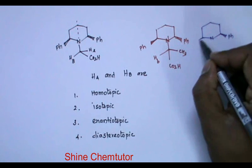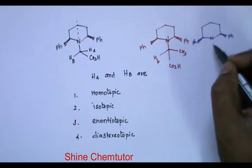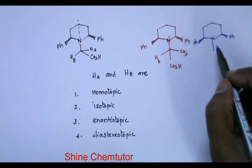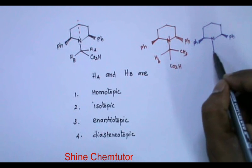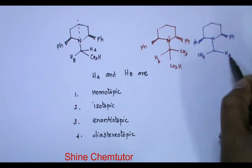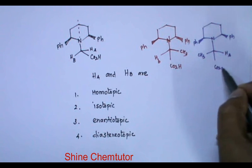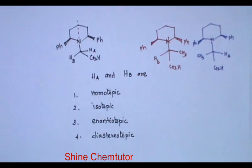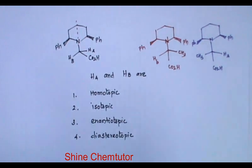So we have Ph here. Here also it is Ph. I have not touched that. Only here I change that. HB is replaced with CH3. HA is as such, then CO2H.